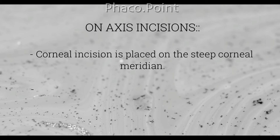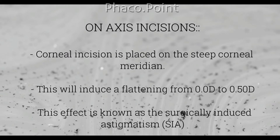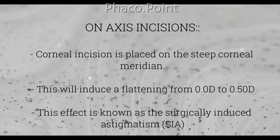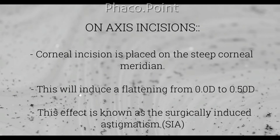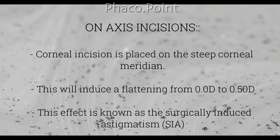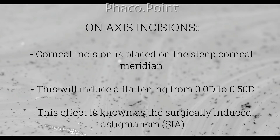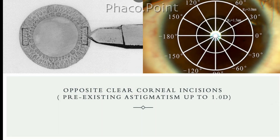One way to combat small amounts of pre-existing corneal astigmatism during cataract surgery is to place the incisions on the steep corneal meridian. This will produce what is known as a surgically induced astigmatism — a flattening effect which will neutralize up to 0.5 diopters of pre-existing corneal astigmatism. If the astigmatism is more than 0.5 diopters, the other option is to create two clear corneal incisions in the same meridian — so-called paired or opposite corneal incisions.